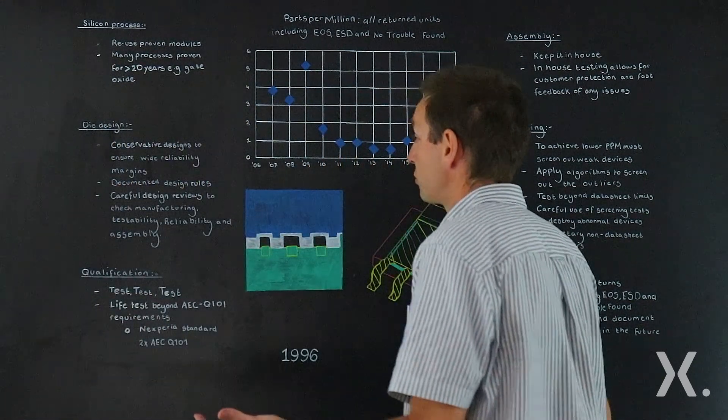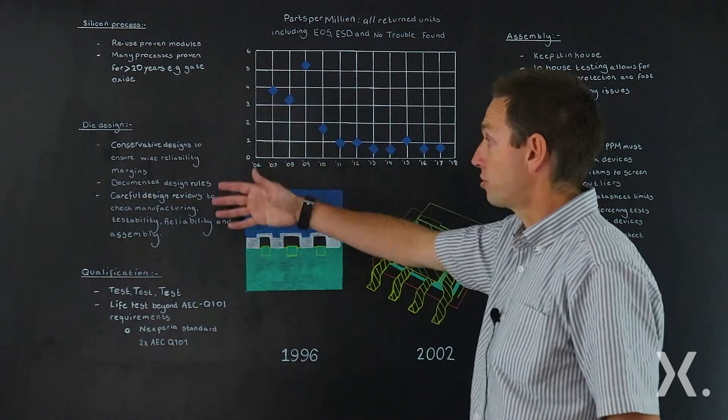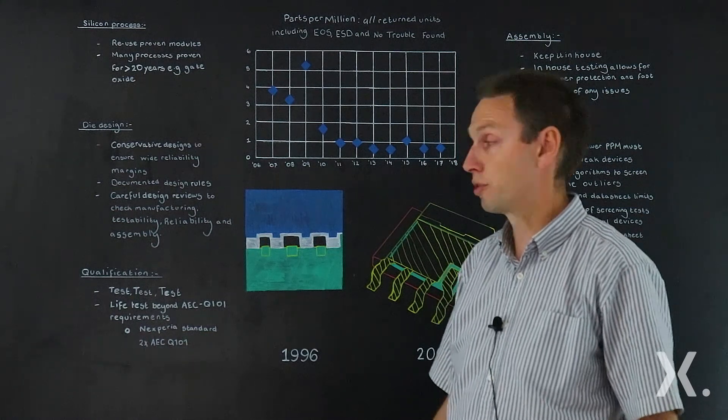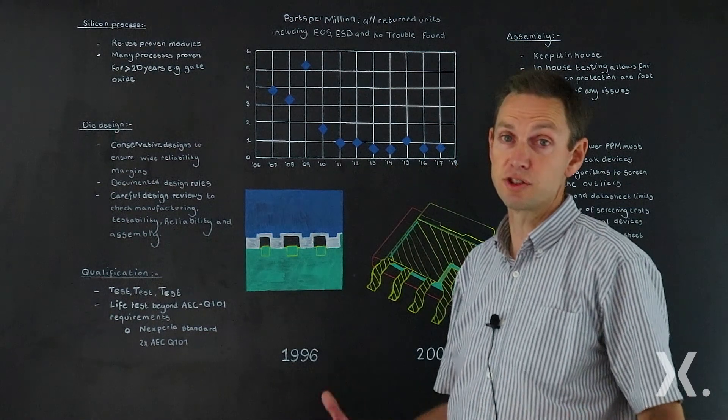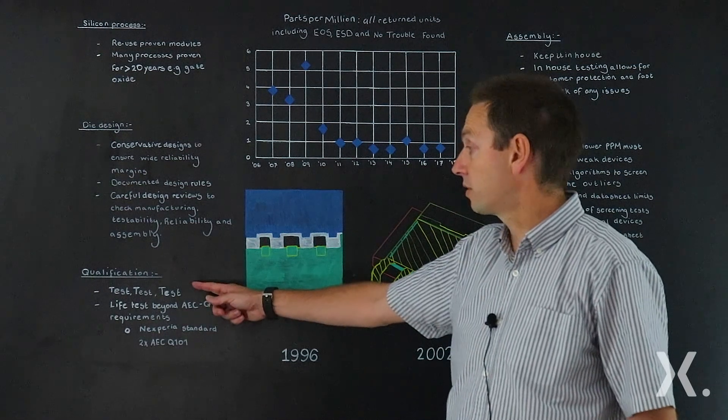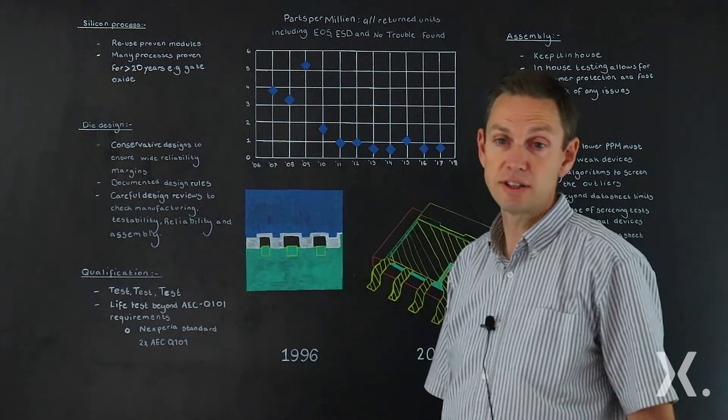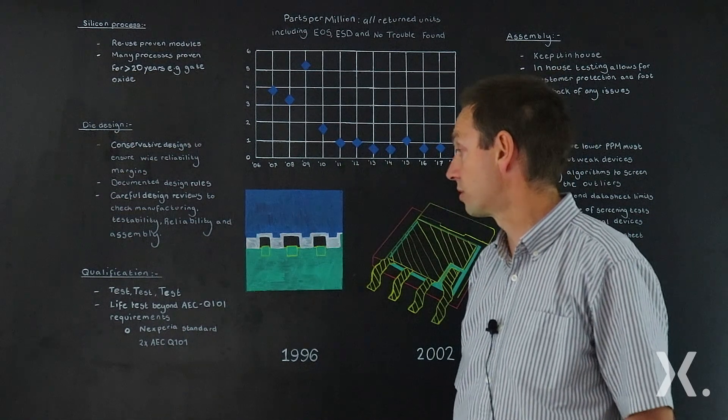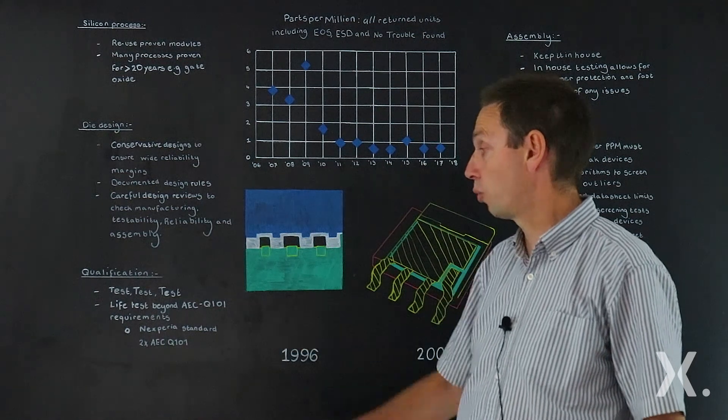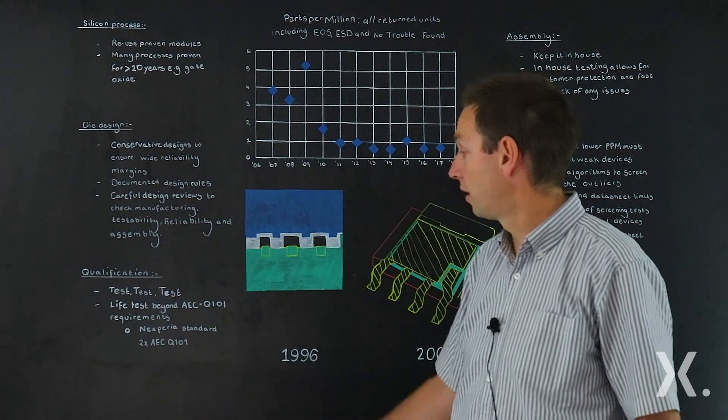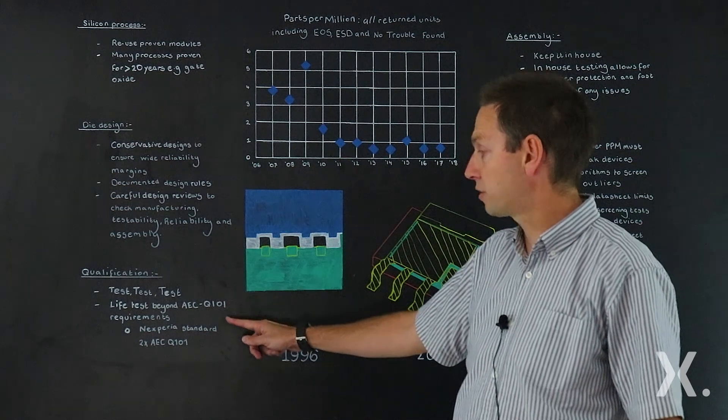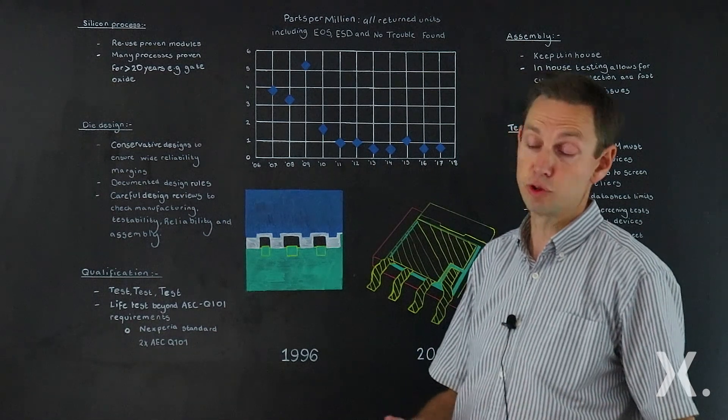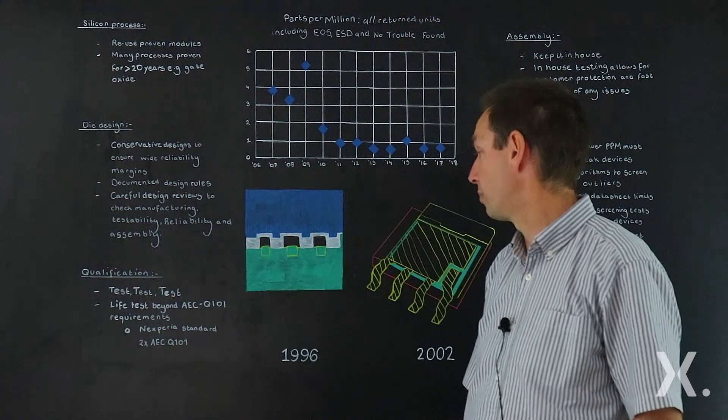Now, we've now made good MOSFETs. We've got silicon processing, we've designed them, we've assembled them, we've tested them. Before release, we go through a qualification process. Everybody does. And this is absolutely key. It's the last chance to really find out any issues. And there's nothing better than testing, testing, testing. The more testing we do, the more chance we've got of detecting problems early on in our development process. And of course, there are industry standards. AEC Q101 has a whole set of requirements that we have to meet, but that only takes you so far. So at Nexperia, our standards always do twice the duration that the AEC Q101 means. So instead of a thousand hours, we'll do two thousand hours of life testing in many situations.